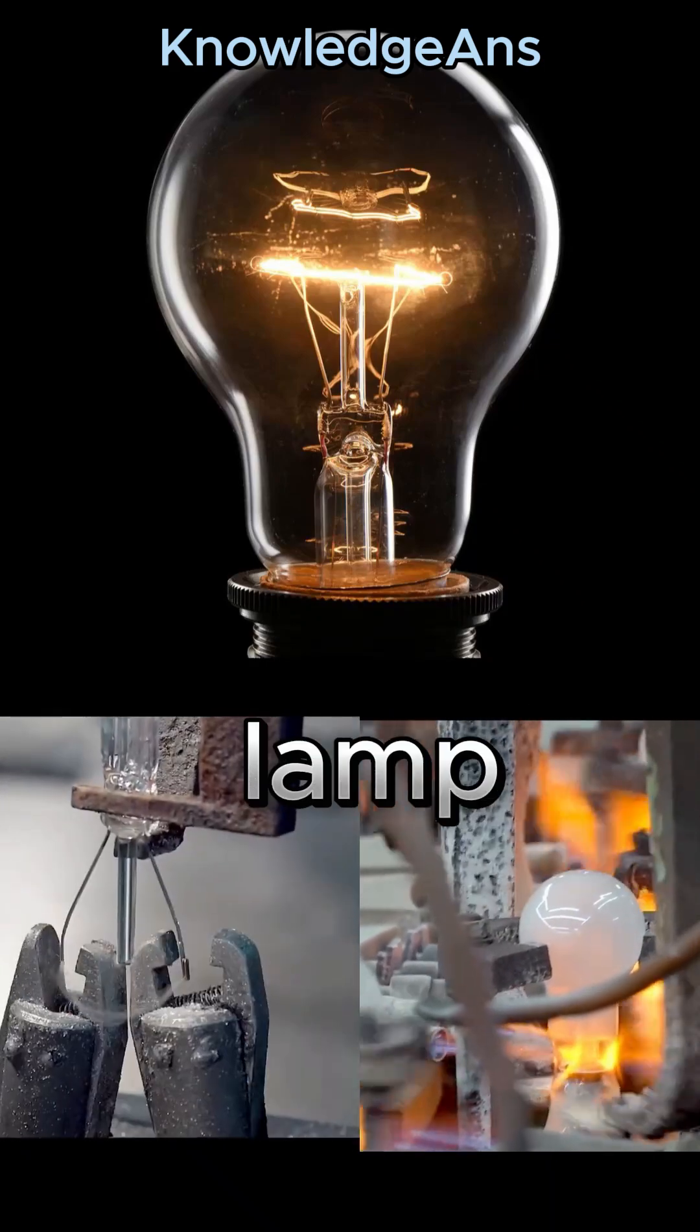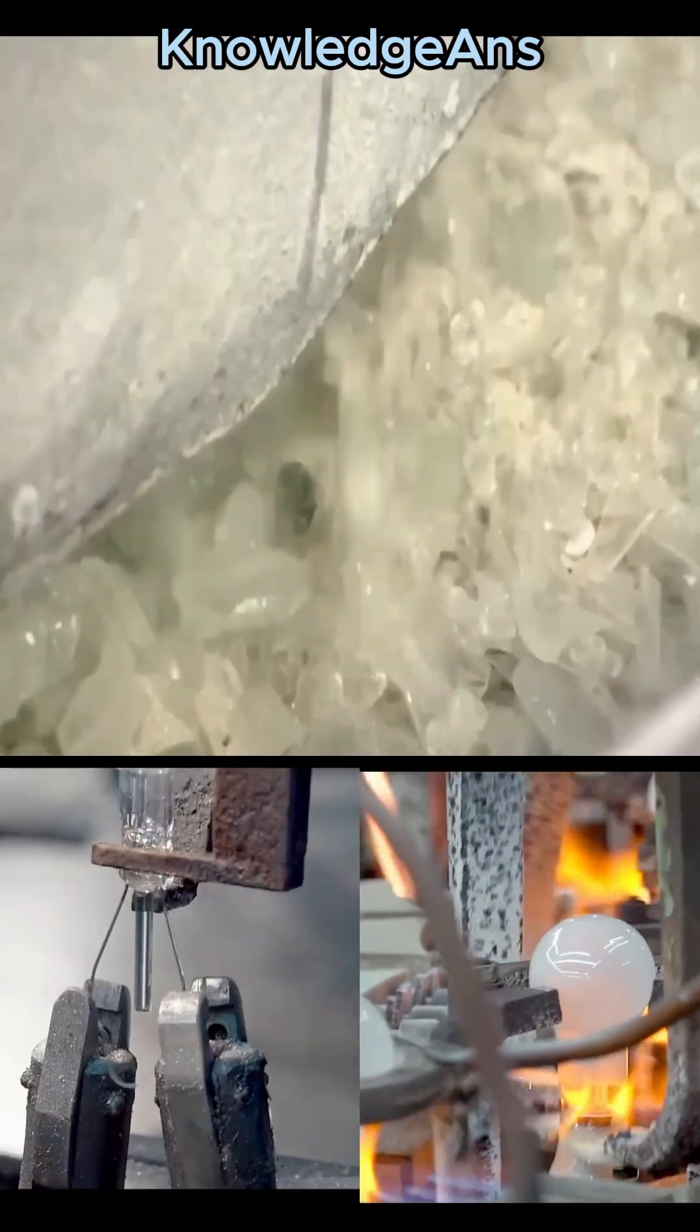How is an electric light bulb made? The lamp glass is made from a mixture of limestone, potassium, and sand.